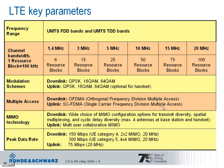Regarding LTE peak data rates: in the downlink we can achieve 150 Mbit/s with a 2x2 MIMO configuration, represented by UE category 4, and even 300 Mbit/s peak data rate in the downlink with UE category 5, which corresponds to the 4x4 MIMO setup. Both values apply to 20 MHz operation. In the uplink, 75 Mbit/s peak data rate in 20 MHz operation is possible.